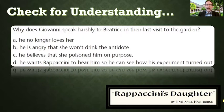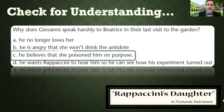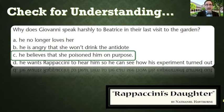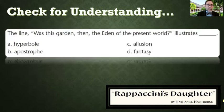Why does Giovanni speak harshly to Beatrice in their last visit in the garden? Now this is the resolution of the story, so if you haven't read it we're about to spoil everything. He believes he's been poisoned and he believes that she did it on purpose. In reality she didn't — Rappaccini was the mastermind behind what was going on, not his poor innocent daughter.